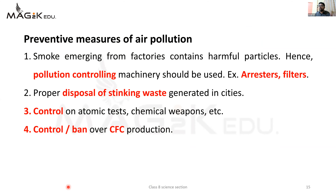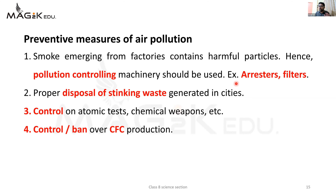Ab yeh sab jo hum logo ne dekha woh air pollution ke liye siruwara tha. Ab is air pollution ko rokne ke liye hum log kya kar sakte hain - preventive measures of air pollution. Smoke emerging from the factories contain harmful particles, hence pollution controlling machinery should be used - example: arrestors and filters. Factories se jo smoke nikalta hai us pe control karna bahut zaroori hai. Arrestors aur filters kya karenge - jo harmful smoke bahar nikal raha hota hai use filter karenge, usmein se jo harmful substances hain unko alag kar denge, aur sirf utna hi smoke allow karenge jo control mein rahega.